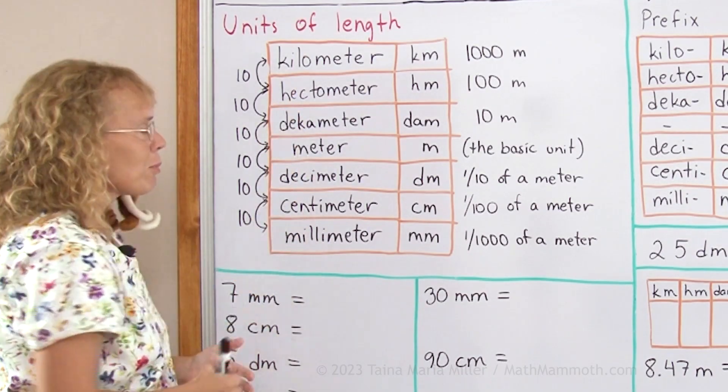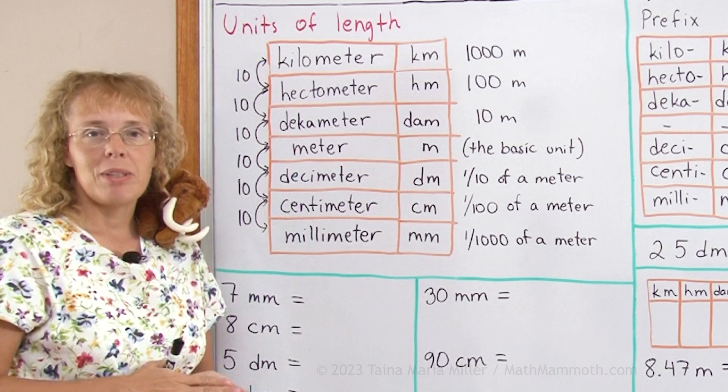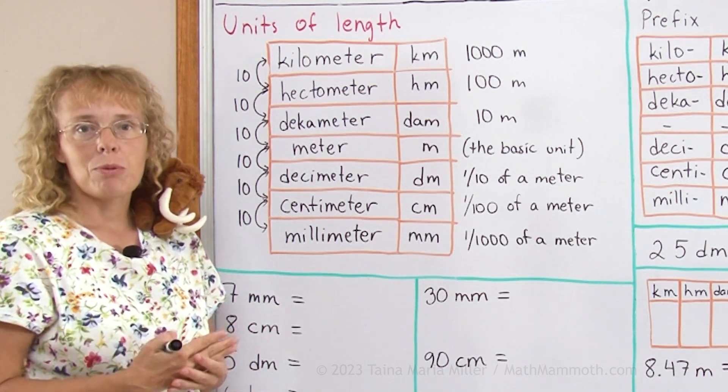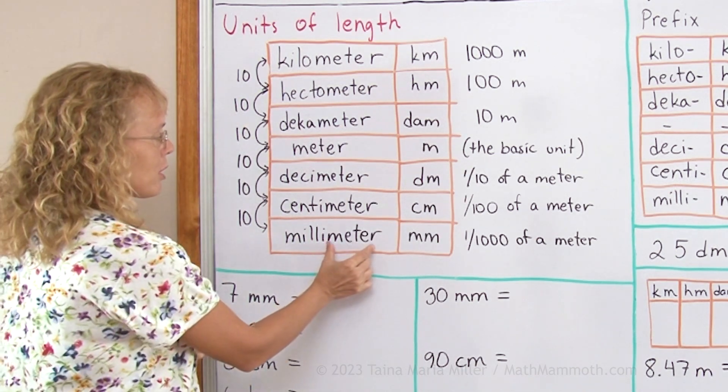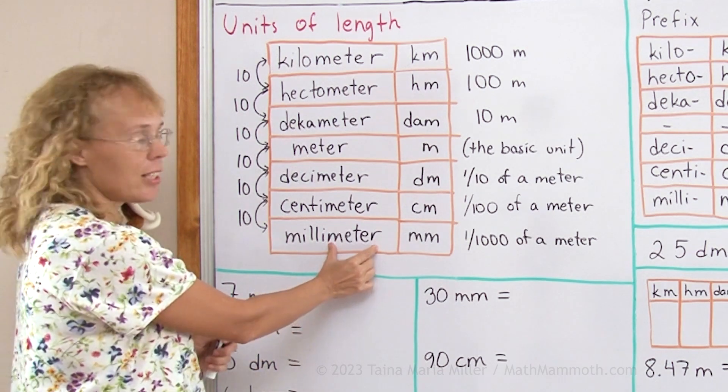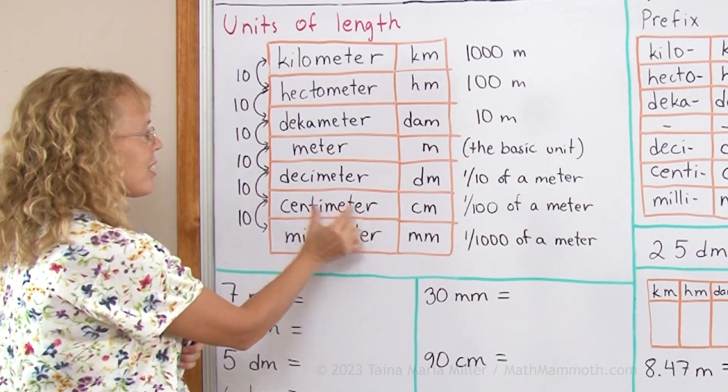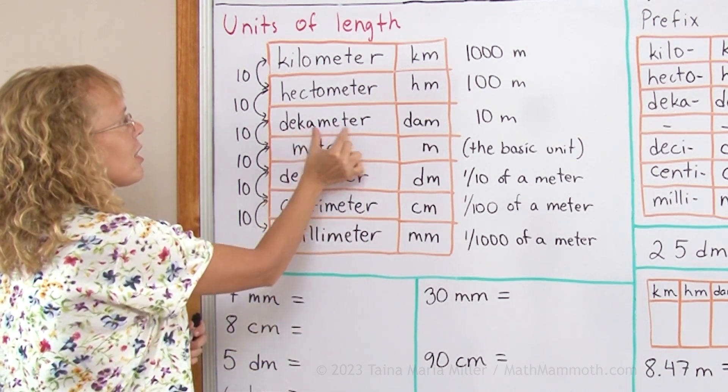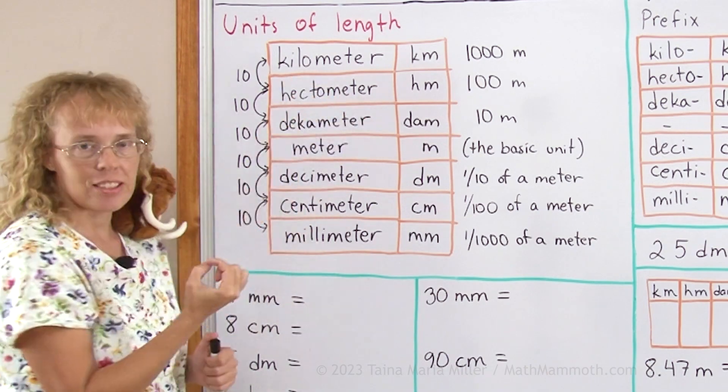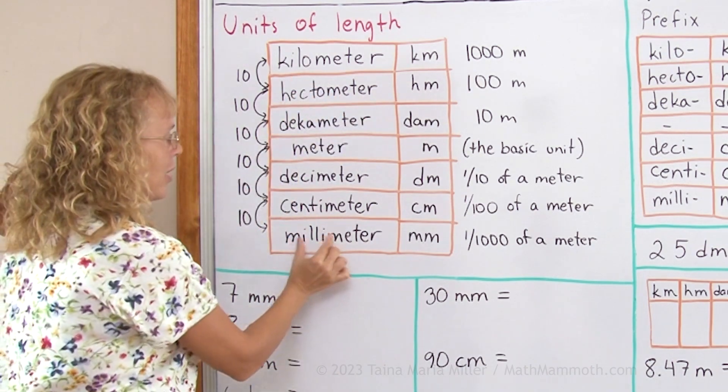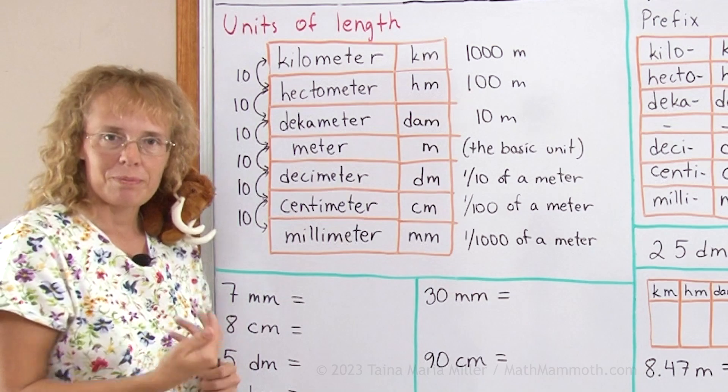And the same kind of table would be done for any kind of metric units. For volume we would use liters, so we would just replace the word meter here with liter: milliliter, centiliter, deciliter, liter, decaliter, hectolitre, kiloliter. Or gram: milligram, centigram, and so on.